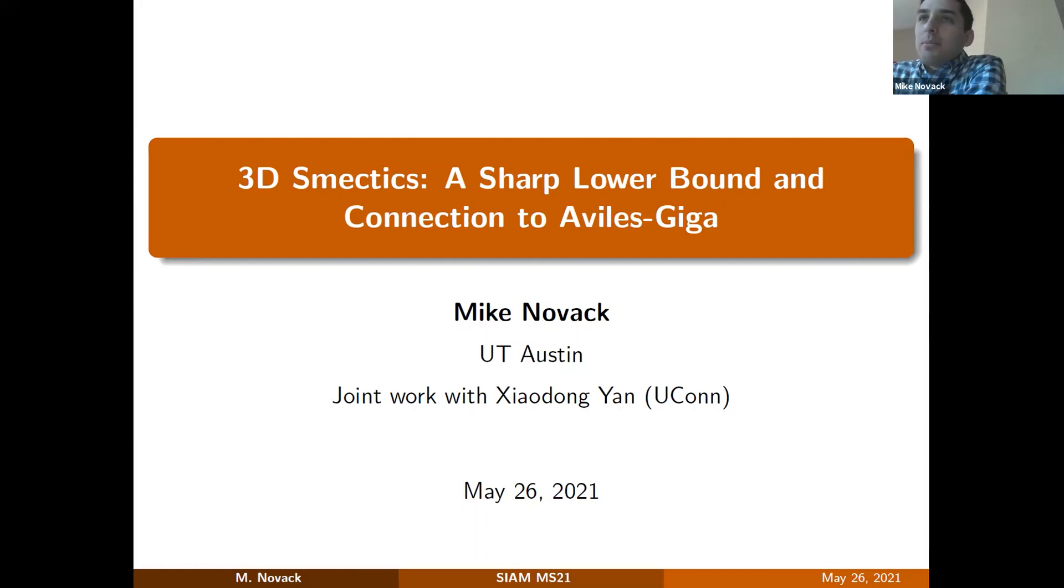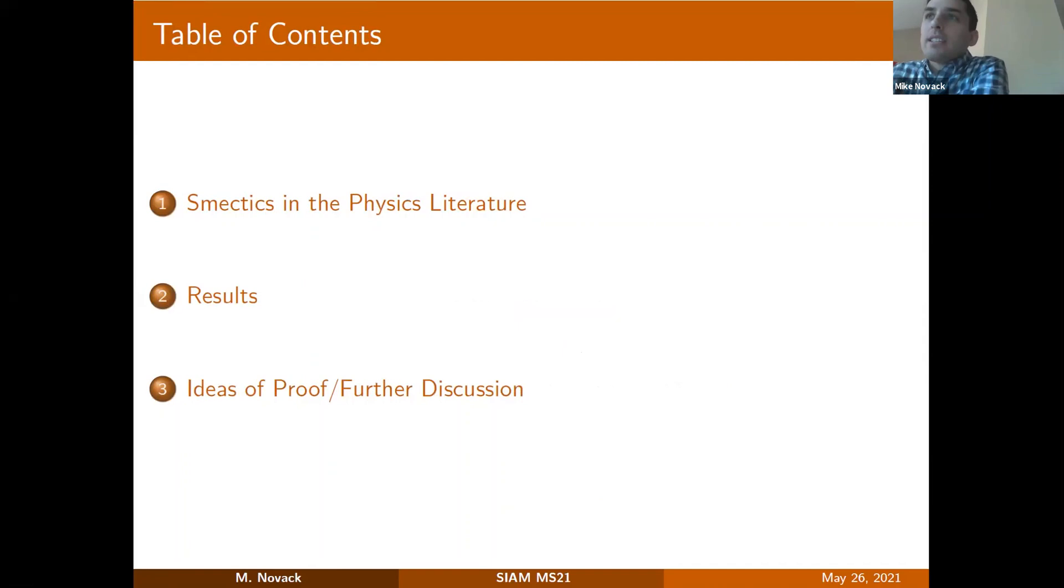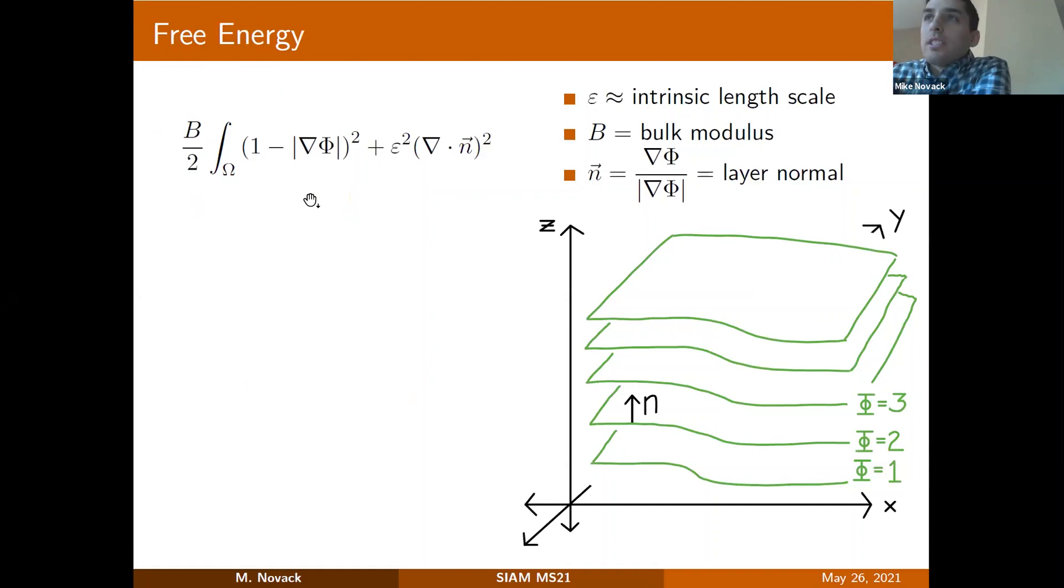Today I'm going to be telling you about 3D semectic liquid crystals, and we're going to discuss a sharp lower bound. The proof involves a connection to the 2D Avila-Giga functional. The outline is I'll begin with a discussion of the semectics in the physics literature, then move on to the statement of our results, and then hopefully at the end I'll have some time to tell you about some ideas in the proof.